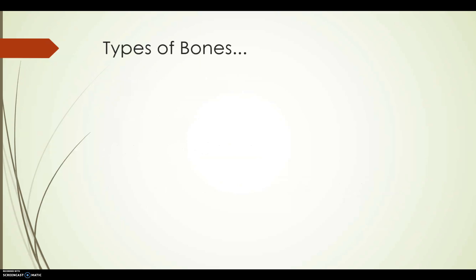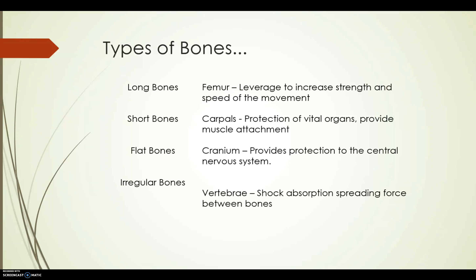Now looking at the types of bones — four main types: long bones, short bones, flat bones, and irregular bones. We're looking at examples and what they are there to do. A long bone, like your femur or the long bones in your fingers such as metacarpals, gives leverage to increase the strength and speed of movement. Short bones, which are the carpals — the smaller bones within your knuckles or joints — are involved in protecting vital organs and also help provide muscle attachment, such as attachment of ligaments or tendons within those joints.